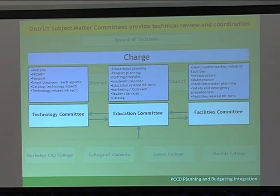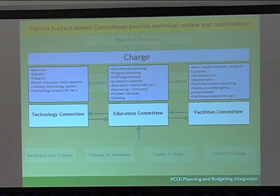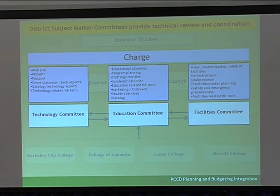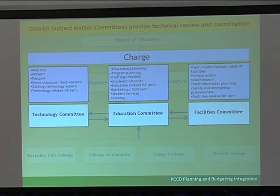The last committee is the facilities committee — they would look at facilities. But there was always going to be overlap. For example, smart classrooms have to do with both technology and facilities, which is why you see the arrows going back and forth. It wouldn't just go through the facilities committee — it would also go through the technology committee, and hopefully a resolution recommendation would come from both bodies that would be at least similar. Importantly, they would not stop the recommendation from the college — they would still pass it forward, but with a recommendation based on that committee's feedback.